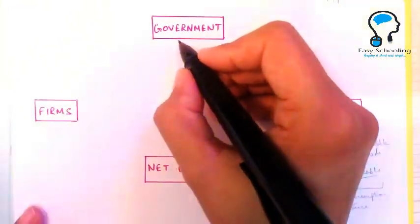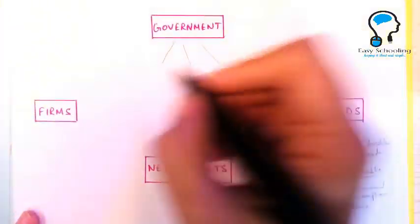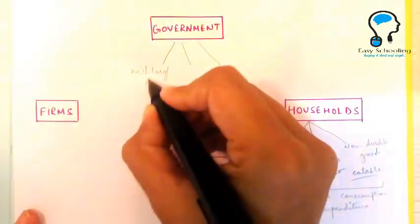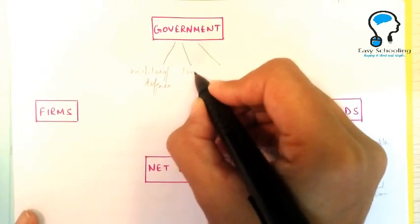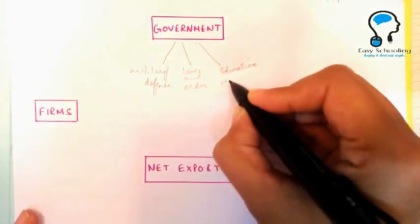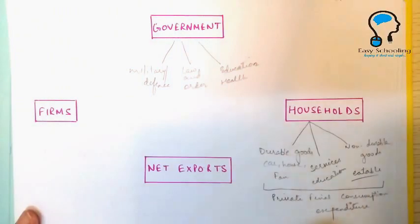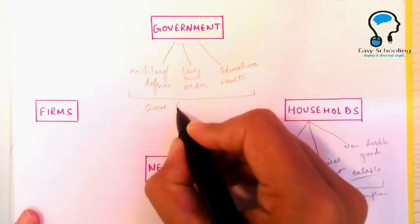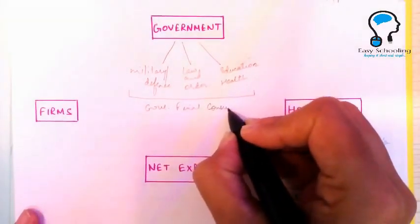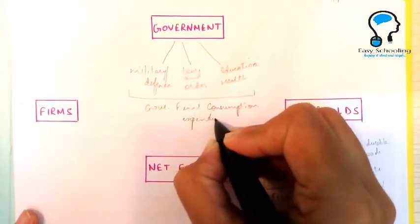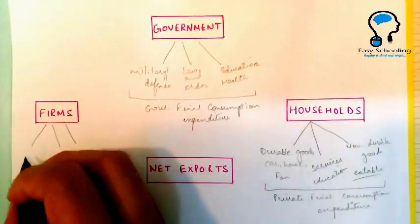Government spends money on many areas in the economy. It can spend money on military or defense services, or law and order. It also spends money to provide education, health facilities, and other infrastructural facilities. Together this is called Government Final Consumption Expenditure (GFCE).